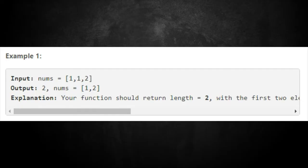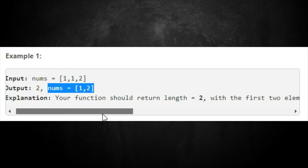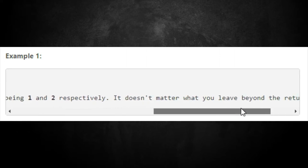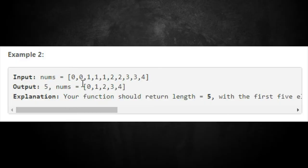For Example 1, we have [1, 1, 2] and the output should be two, because we only want one and two. Your function should return length two with the first two elements of nums being [1, 2]. For Example 2, input is [0, 0, 1, 1, 1, 2, 2, 3, 3, 4] with duplicates of zero, one, two, and three. The output array is [0, 1, 2, 3, 4].